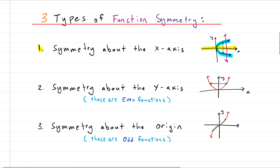The next type is symmetry about the y-axis. Whatever happens to the right of the y-axis is mirrored exactly identically on the left. Functions that exhibit y-axis symmetry are called even functions.